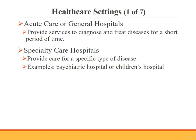Today, healthcare is provided in many different settings. The first setting is the acute care or general hospital, which provides services to diagnose and treat diseases for a short period of time. A specialty care hospital, on the other hand, provides care for a specific type of disease — for example, psychiatric hospitals and children's hospitals are both specialty hospitals.